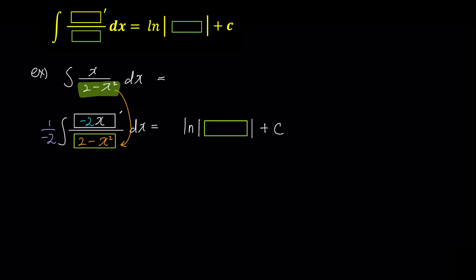Multiplying negative 2 divided by negative 2 does not change the equation at all. Now, let's fill the blank on the right. We multiply by negative half and put 2 minus x squared in the green box on the right, which is the same as the green box on the left. This will be the answer.